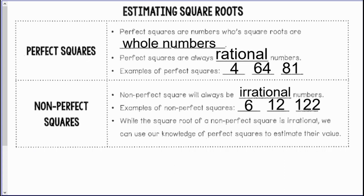Non-perfect squares are always irrational numbers. You cannot write an irrational number as a fraction, and they are decimals that do not have a repeating pattern and do not end. Some examples of non-perfect squares would be 6, 12, and 122, because all those square roots will be numbers that do not end. While the square root of a non-perfect square is irrational, we can use our knowledge of perfect squares to estimate their value.